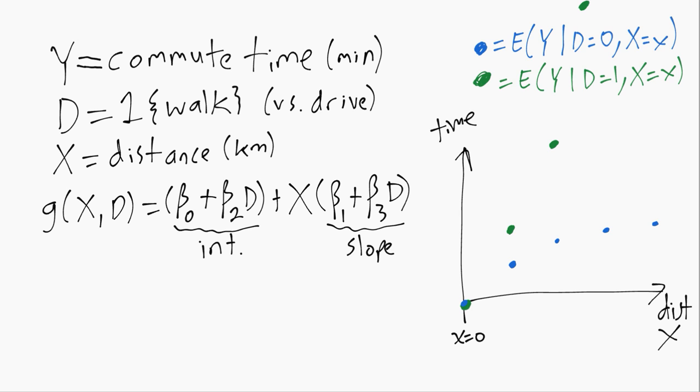So even though the intercept of the CMF is zero, because of the curvature here, the linear projection or the best linear approximation, they actually end up having a negative intercept down here. So again, this is for the walker with d equals one. So this intercept is the full beta naught plus beta two, because d equals one.